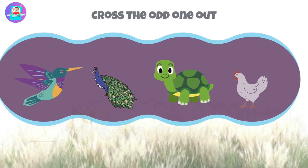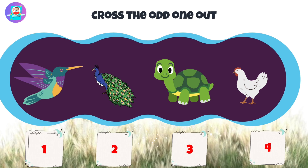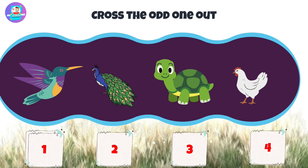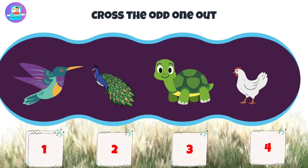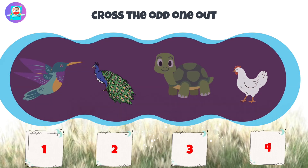Okay, next, there are 4 pictures: 1, 2, 3, 4. Put the odd one out.